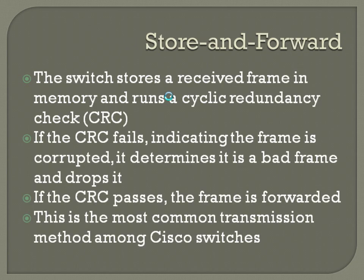The store and forward method is what is most commonly used today. The switch stores a received frame in memory and runs a cyclic redundancy check — a CRC check — to see if there are any errors with it. If the CRC fails, it indicates the frame is corrupted, so the switch determines it's a bad frame and drops it. If the CRC test passes, the frame gets forwarded on to the destination MAC address.